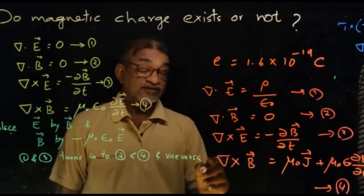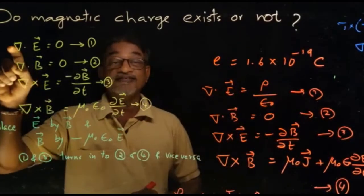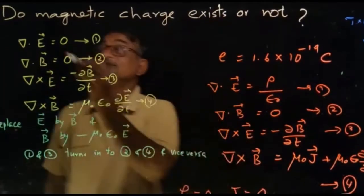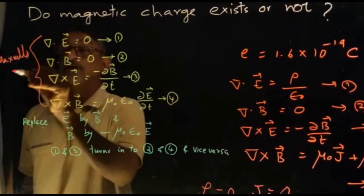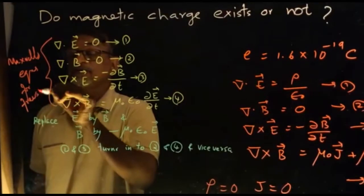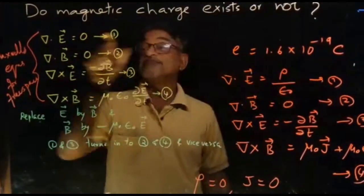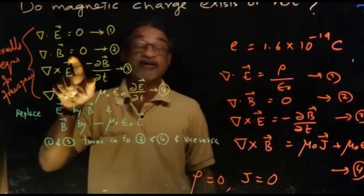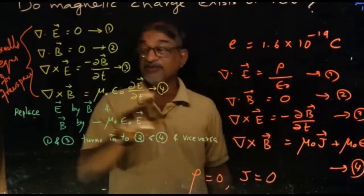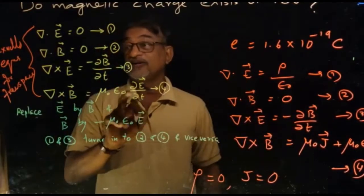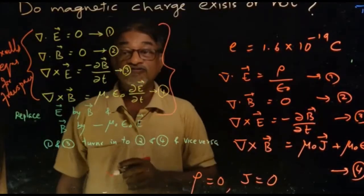If we put ρ = 0 and J = 0 in these four equations, we get the equations for free space. These are Maxwell's equations for free space. Equation 1 becomes ∇·E = 0. Equation 2 remains ∇·B = 0. Equation 3 remains the same, and putting J = 0 in equation 4 gives ∇×B = μ₀ε₀ ∂E/∂t.